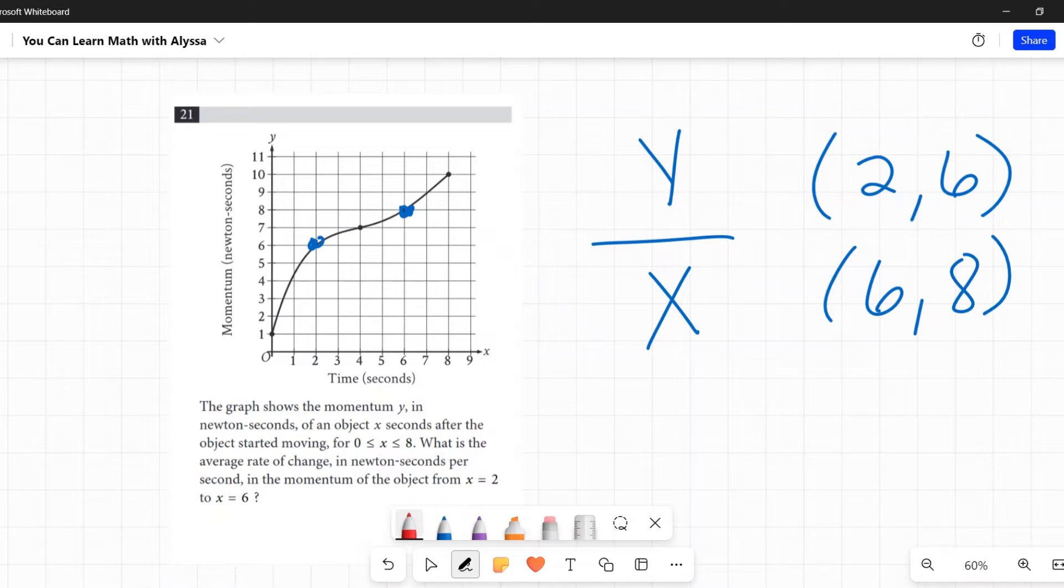What would the slope of a line be connecting those two points? Well, it's change in y over change in x, so you subtract the y's on top and you subtract the x's on the bottom. I'm going to start with the top one and then go to the bottom one, and I need to do that for both.